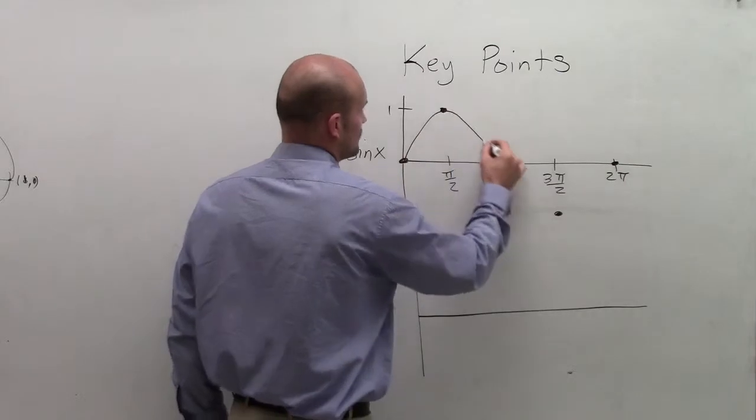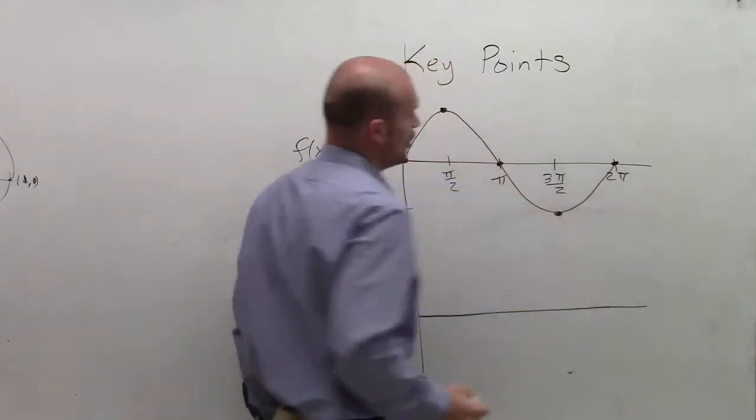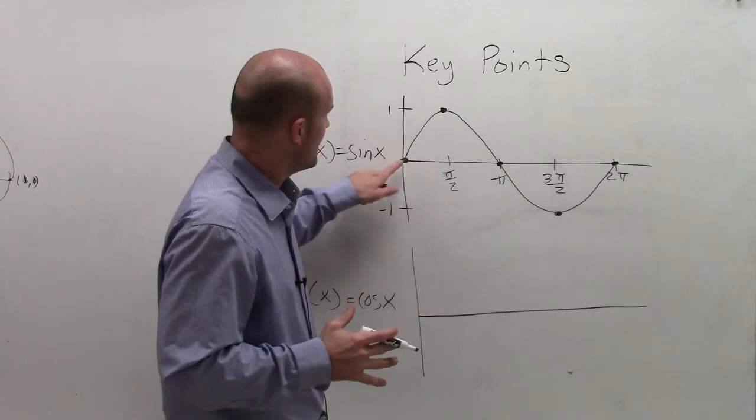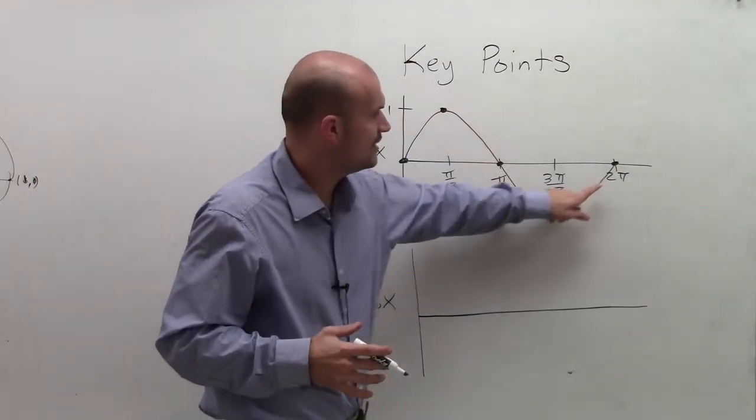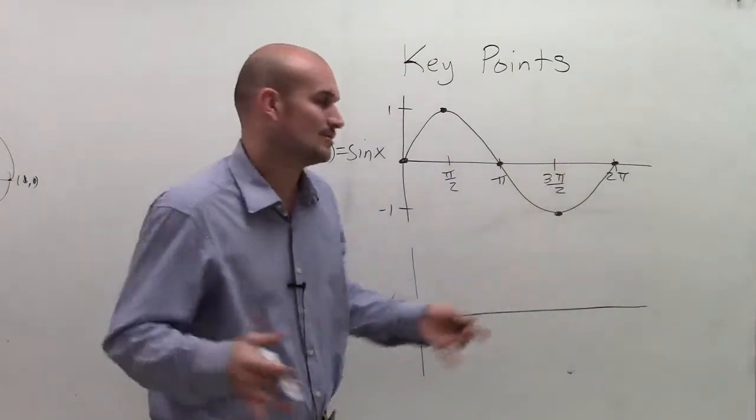And what you can see is this is what we call one cycle or one period. You can see that the graph has started at 0, it went up, crossed, went back down, and completed one cycle or one period.